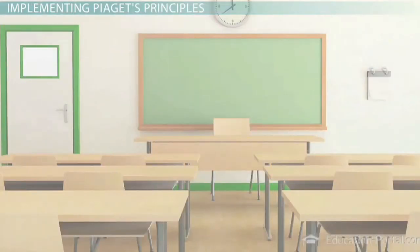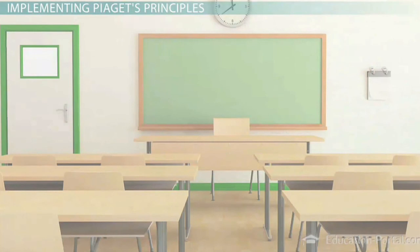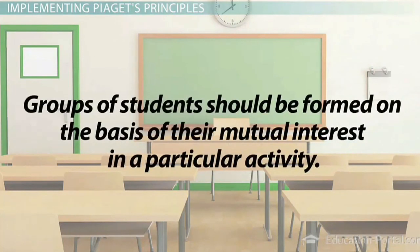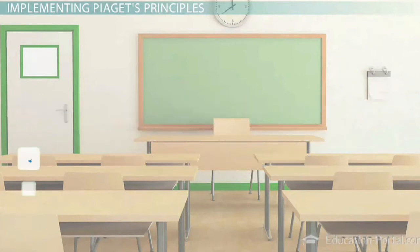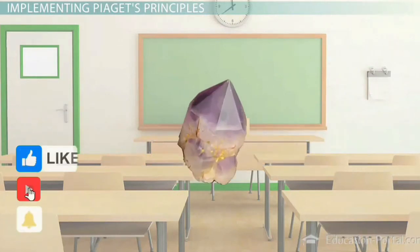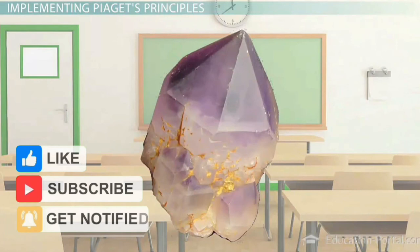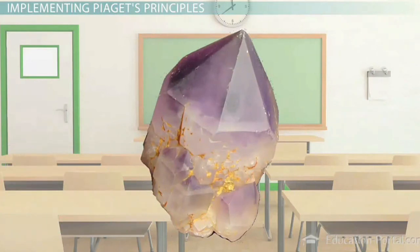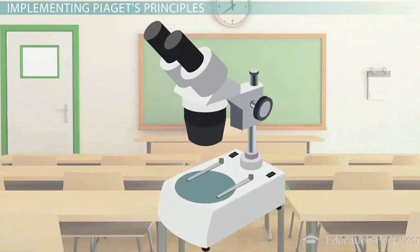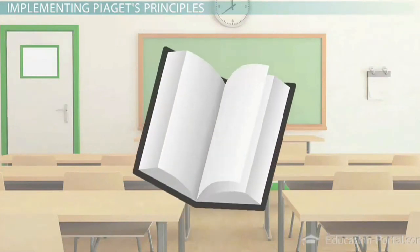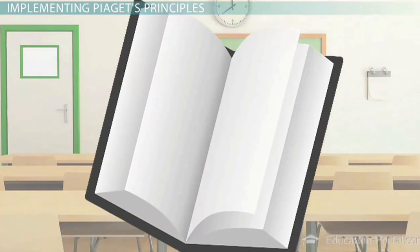In elementary and secondary school, groups of students should be formed on the basis of mutual interests when possible. For example, in one second grade science class, some children were interested in crystals. They made a crystal museum of examples they collected, grew crystals, examined them under a microscope, and read books about them. The key is to preserve students' identification of cause and effect situations and social interactions about the accuracy of their proposed solutions.